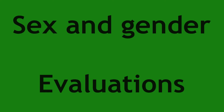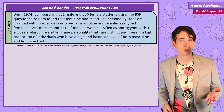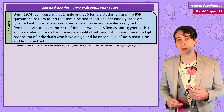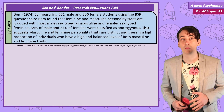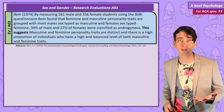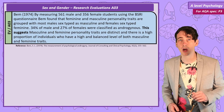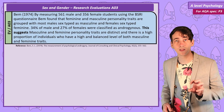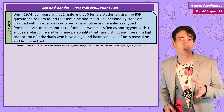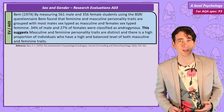Evaluations. Let's consider Bem's own research as evaluative evidence for gender. She measured 561 males and 356 females using the BSRI, finding that perhaps unsurprisingly, most males were sex typed with masculine personality types, and most females were sex typed with feminine personality types. So this provides evidence for the concept of distinct sets of sex typical gendered personality traits. Bem also provides evidence in this study for androgyny, with 34% of males and 27% of females classified as androgynous.